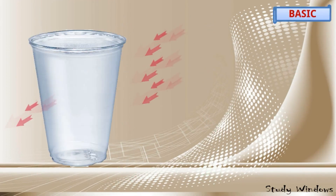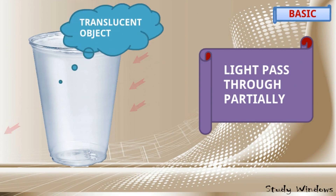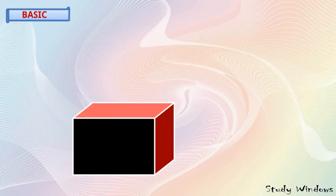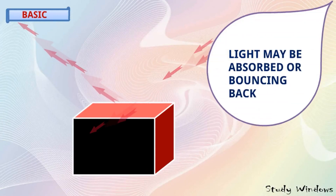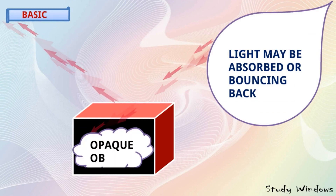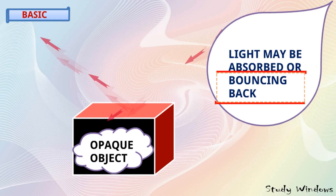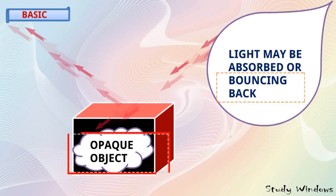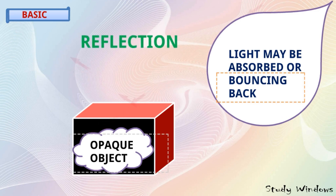If light passes through partially, then the object is called a translucent object. And if light is absorbed or bouncing back to the same medium, then the object is known as an opaque object. If light is bouncing back, the object should be opaque. This bouncing back is known as reflection.